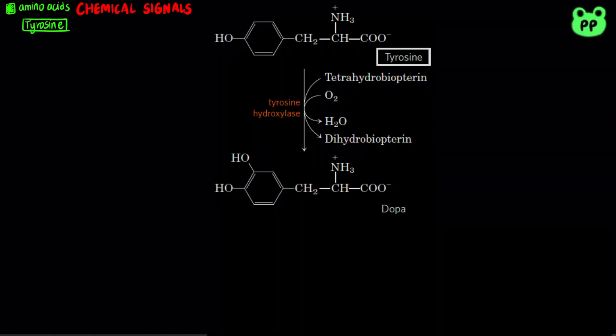Many important biomolecules are derived from amino acids. Tyrosine serves as a precursor to a family of neurotransmitters known as catecholamines. First, tyrosine hydroxylase adds a hydroxyl group to tyrosine, converting it to dopa.